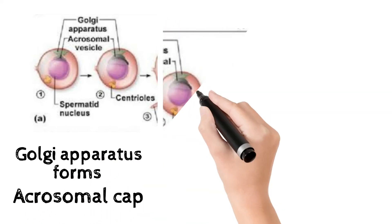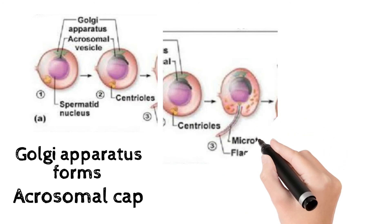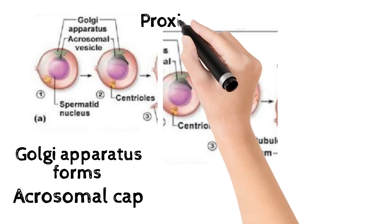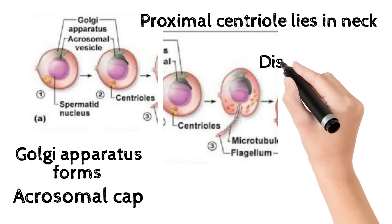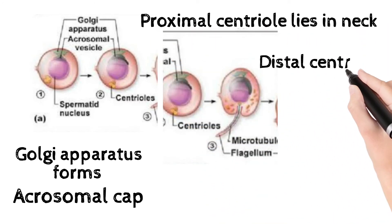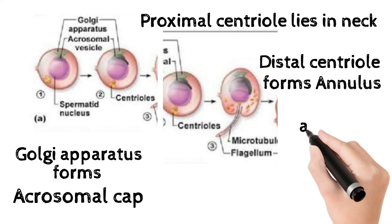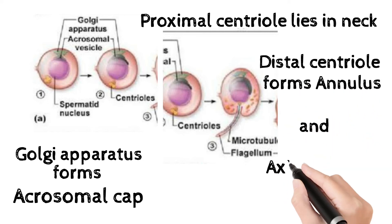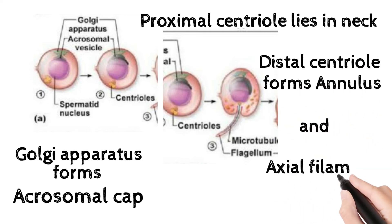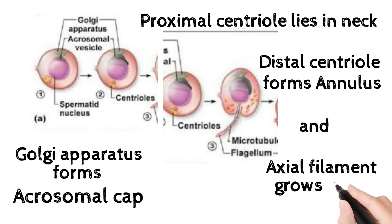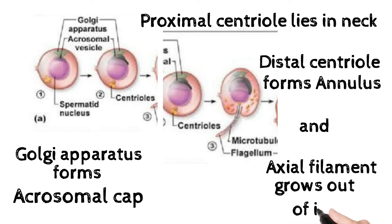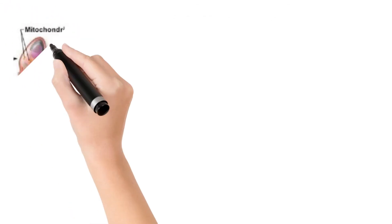The Golgi apparatus forms the acrosomal cap, covering two-thirds of the nucleus. The centrosome divides into proximal centriole and distal centriole. The proximal centriole lies in the neck, while the distal centriole forms the annulus around the neck, and the axial filament grows out of it. Mitochondria form a sheath around the middle piece.